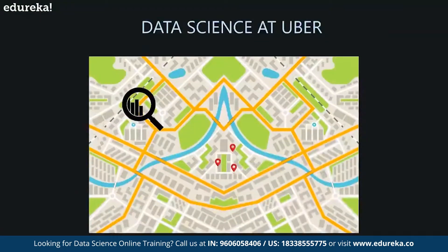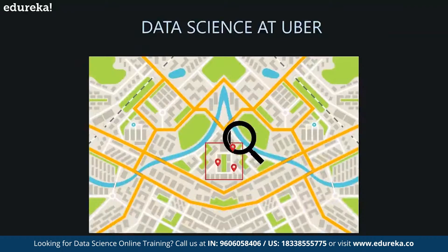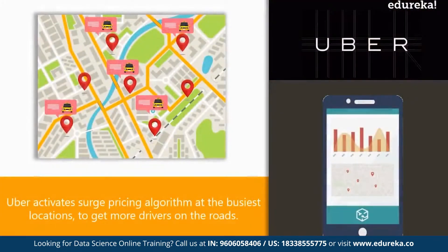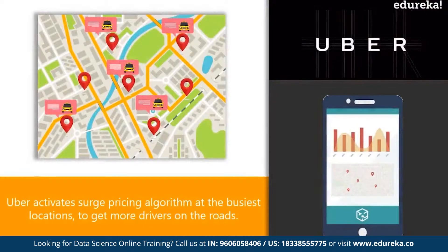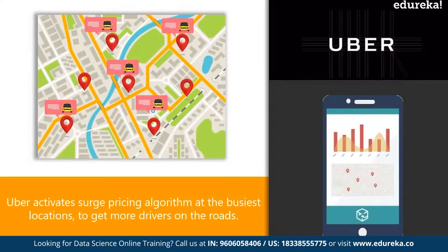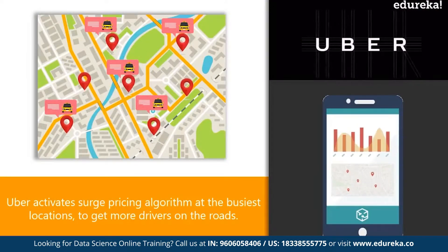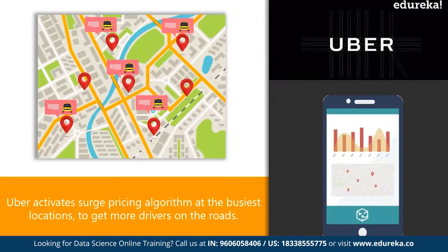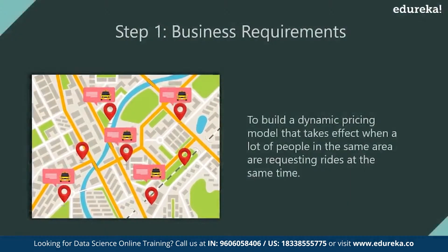Uber implements data science to find out which neighborhoods will be the busiest so that it can activate surge pricing to get more drivers on the road. In this manner, Uber maximizes the number of rides it can provide and hence benefit from this. Uber's surge pricing algorithm uses data science — let's see how.